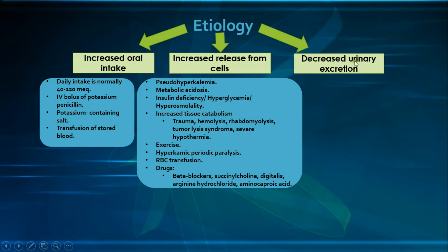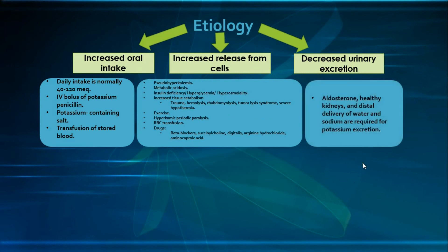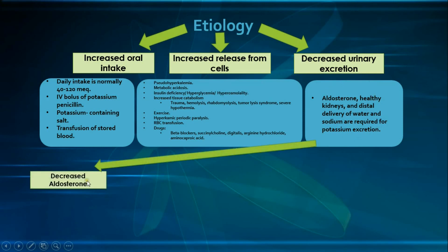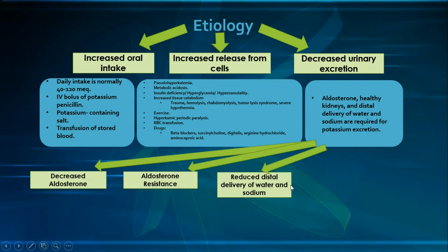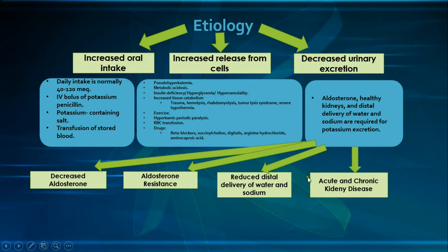Now let's move to the last category: decreased urinary excretion of potassium. In order to have normal potassium excretion in the kidneys, we need: normal serum aldosterone levels, normal healthy kidneys to excrete potassium and respond to aldosterone, and normal amounts of distal delivery of water and sodium — where sodium is exchanged for potassium in the distal nephron. Any derangement of any of those components will result in decreased potassium excretion: decreased aldosterone, aldosterone resistance, reduced distal delivery of water and sodium, or acute and chronic kidney disease.